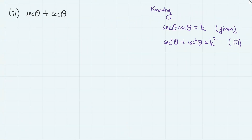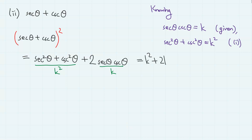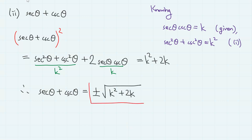Next, sec(theta) + csc(theta). Here we need a bit of intuition — we attempt to obtain its square first. Why the square? Well, if we expand, you will notice that it contains sec²(theta) + csc²(theta), and sec(theta)·csc(theta). We have obtained that sec²(theta) + csc²(theta) is k², and sec(theta)·csc(theta) is given as k. So we have k² + 2k. Therefore, taking square roots, we obtain sec(theta) + csc(theta) = ±√(k² + 2k).